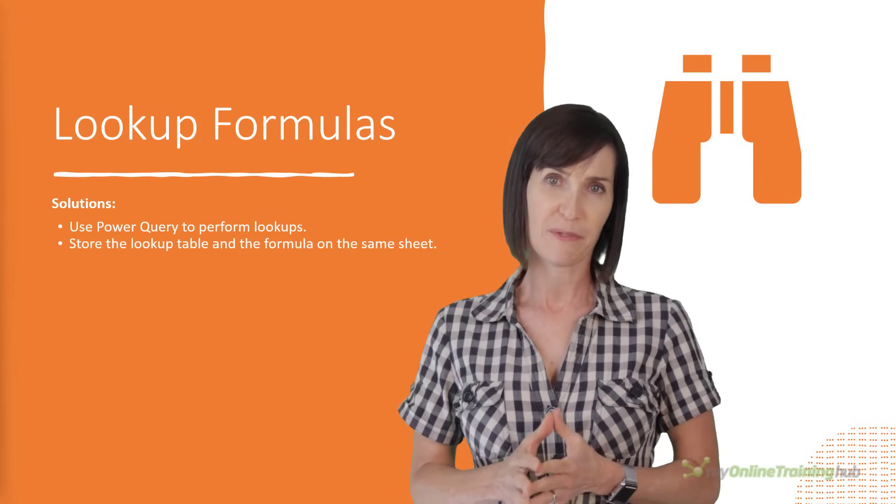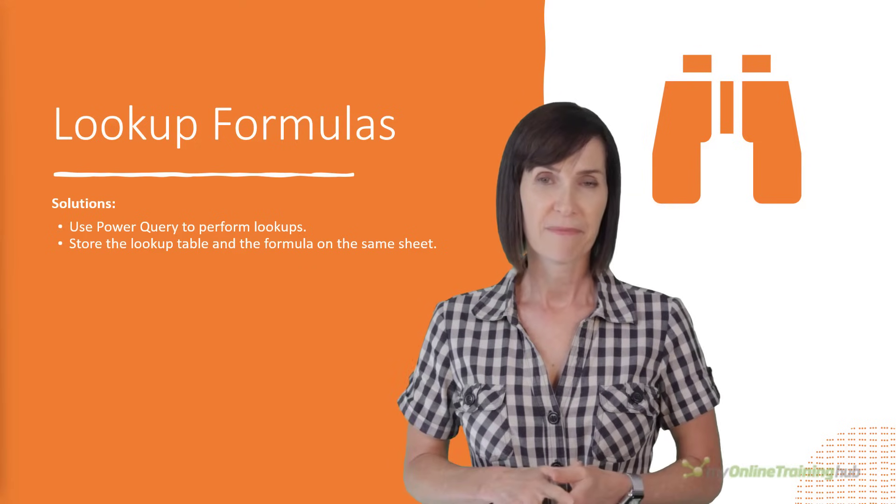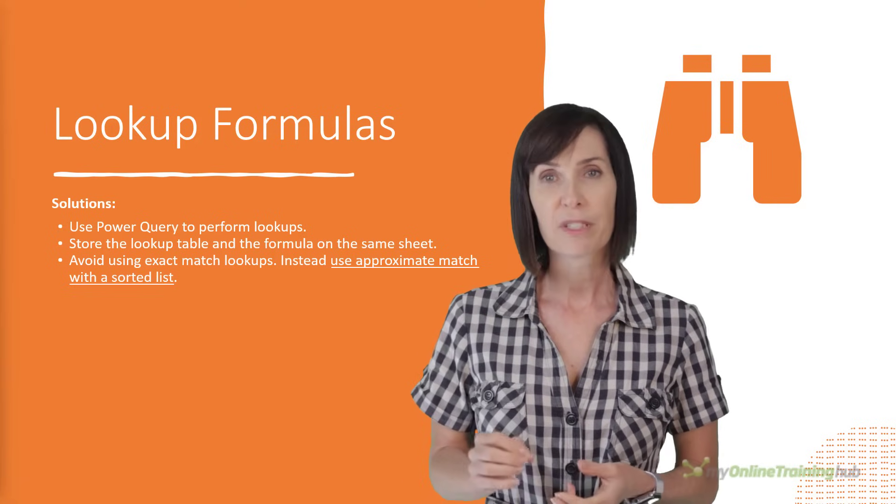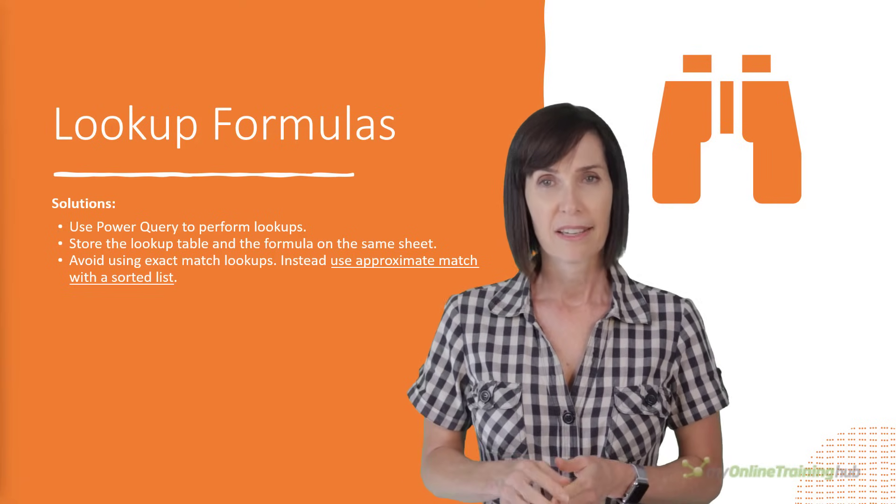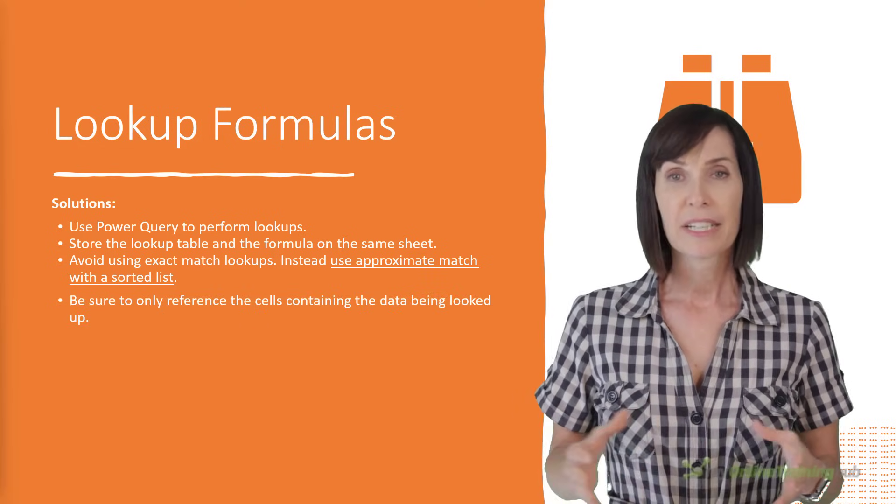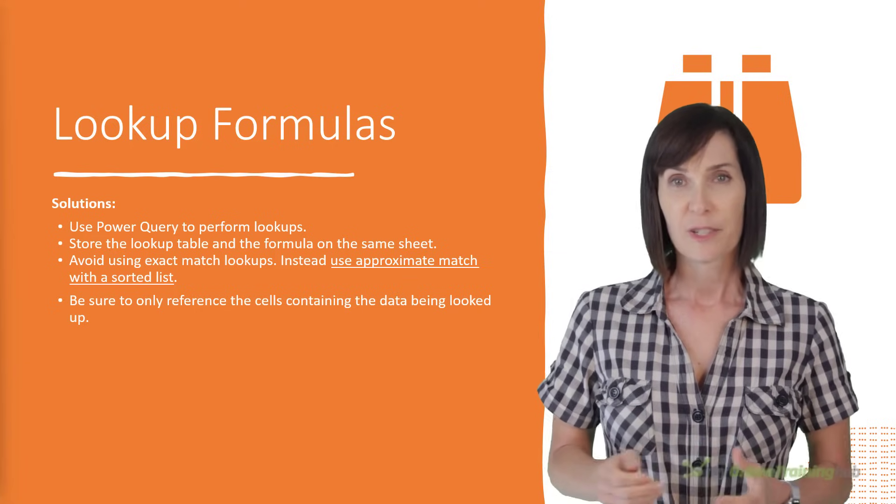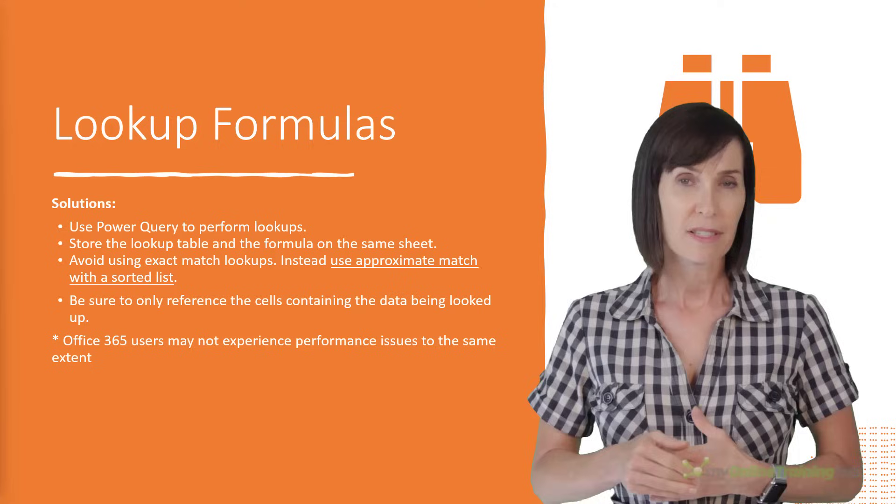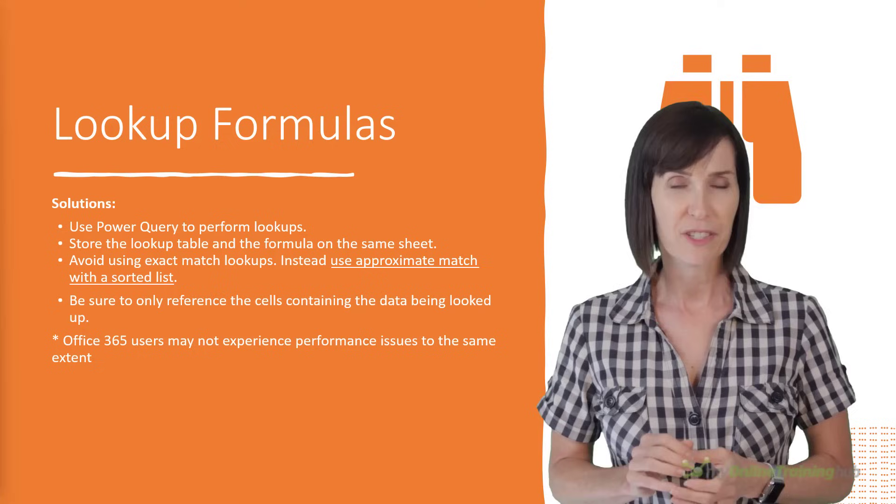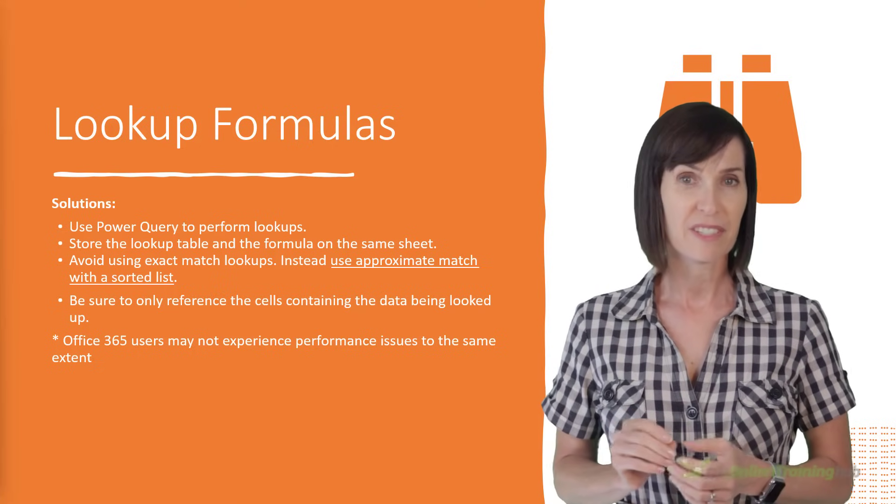Now, if you must use a lookup formula, store the lookup table and the formula on the same sheet. Also, avoid using exact match lookups if you can. Instead, use approximate match with a sorted list. And be sure to only reference cells containing the data being looked up. Including empty rows in the formulas is just going to reduce efficiency. Now, I should point out that 365 users may not experience performance issues to the same extent as those using earlier versions of Excel, due to the new internal cached index Excel creates for lookup functions.